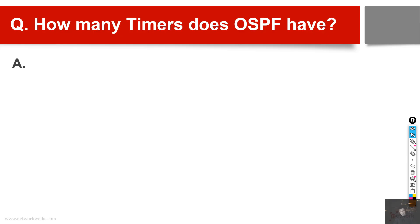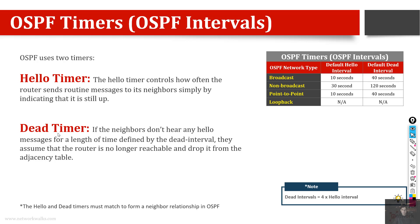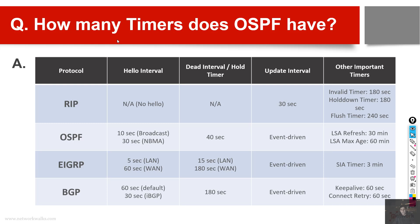Another question an interviewer might ask you is about OSPF timers or OSPF intervals. All routing protocols have timers or intervals — these are internal clocks which help a routing protocol decide when to perform a task or make a decision, just like a timer on your mobile. RIP has an update interval, invalid timer, hold-down, and flush timer. Similarly, EIGRP, BGP, and OSPF all have intervals. This slide contains timers for other routing protocols as well, which you can reference to give a good impression to your interviewer.